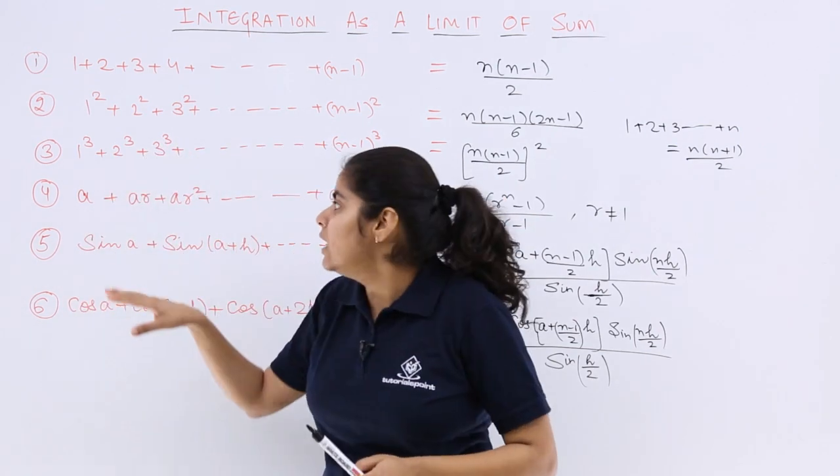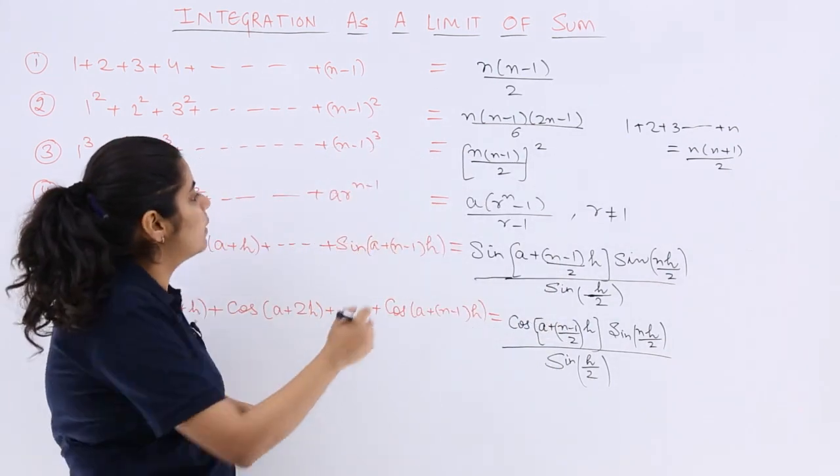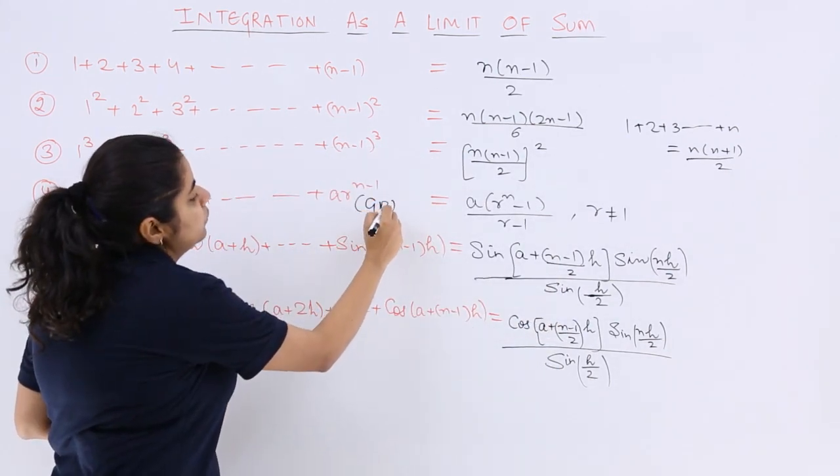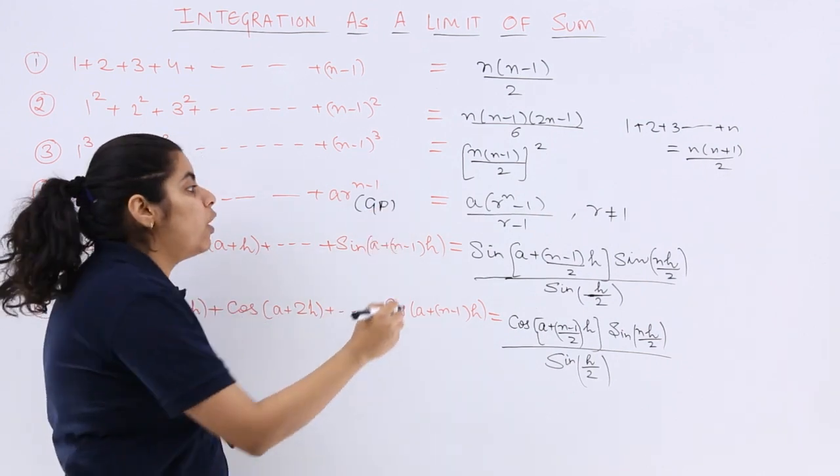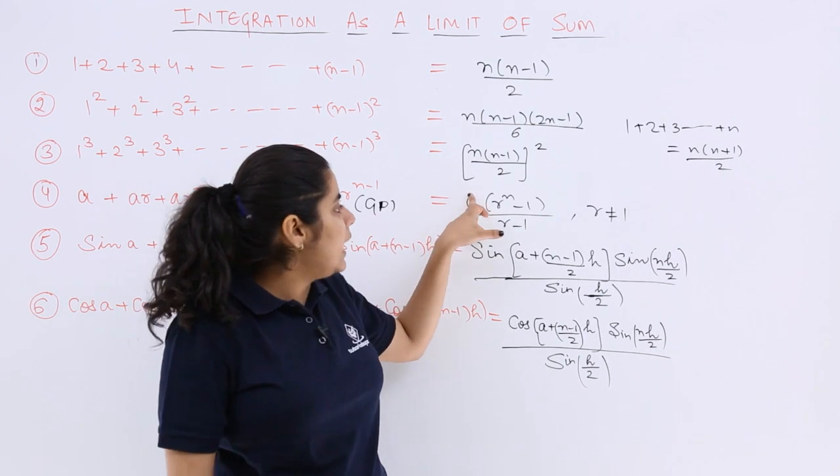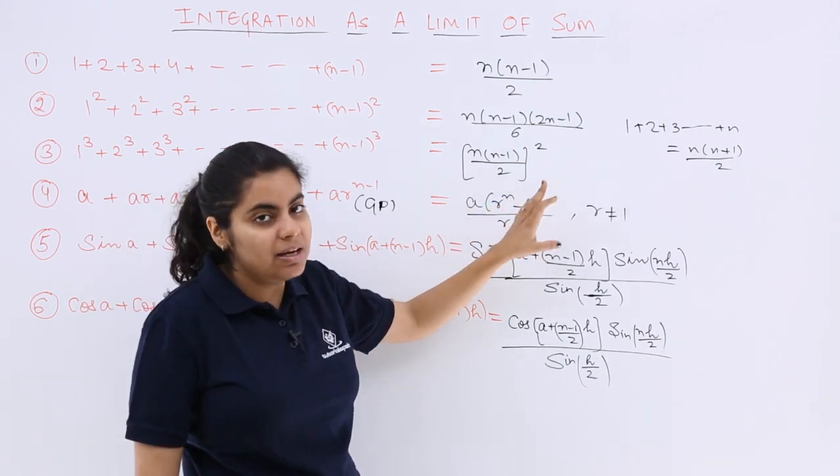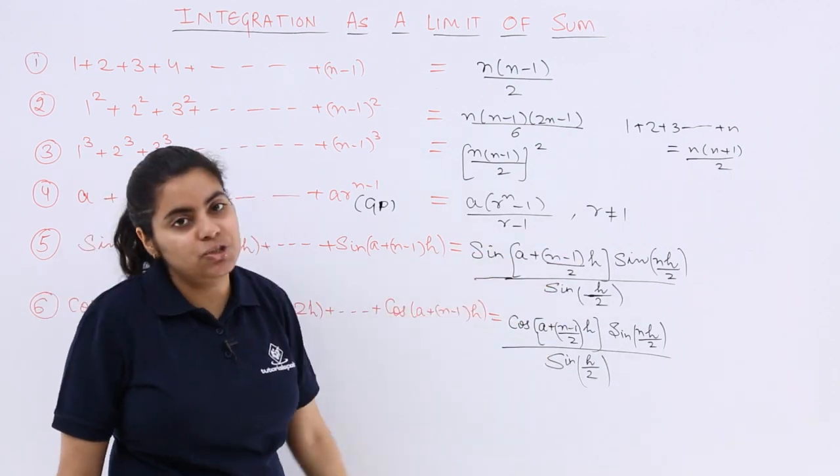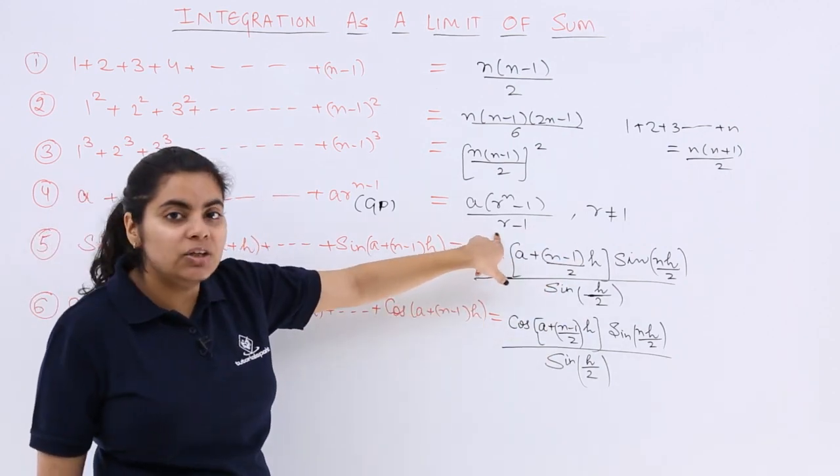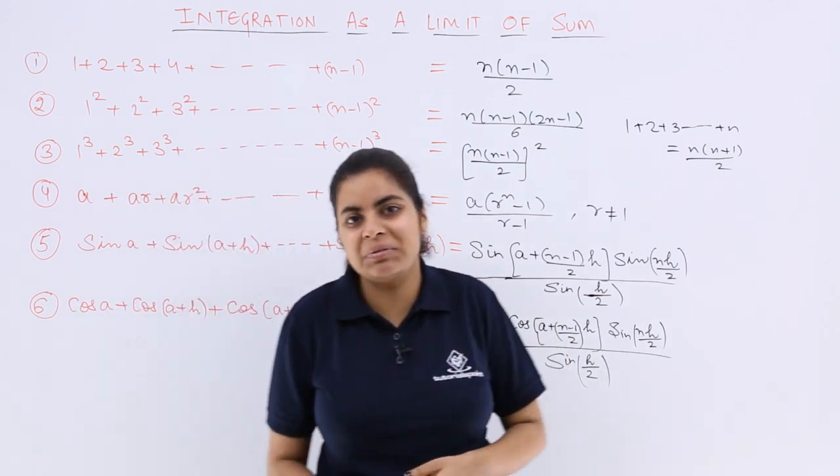Next you see is a plus ar plus ar square till ar raised to the power n minus 1. That means GP, geometric progression. What is the sum of the terms in a geometric progression? A, that is the first term, multiply by common ratio raised to the power n minus 1 upon common ratio minus 1. Since r is in the denominator, it should not be equal to 1. Otherwise, the answer would be not defined.